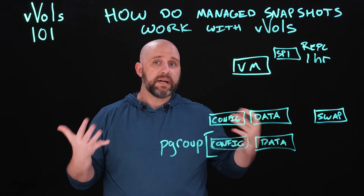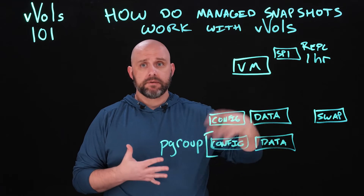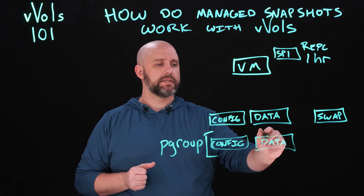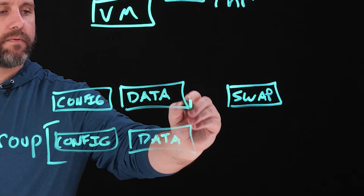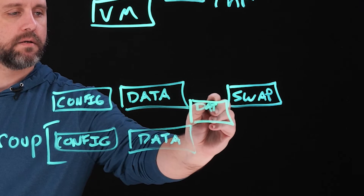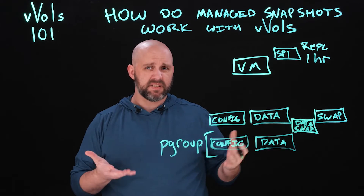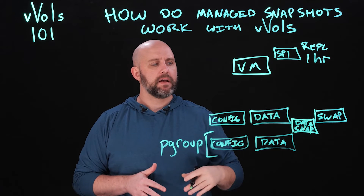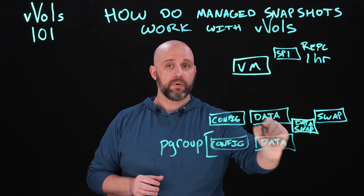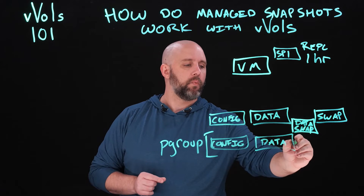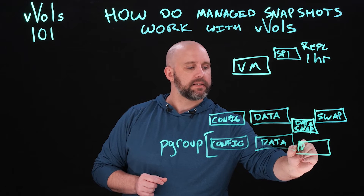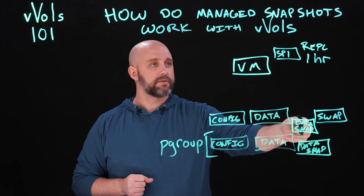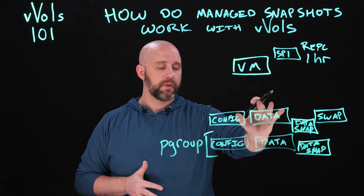When a managed snapshot is taken with vVols, vSphere goes ahead and tells the VASA provider, 'Go ahead and prepare to snapshot this virtual volume.' We get that prepare-to-snapshot virtual volume call as it comes down. When that happens, VASA goes ahead and creates a volume — a data snap, as it's called. This is just an empty placeholder volume sized to whatever the source data vVol is, but it's empty. The VASA provider is making sure it's ready to snapshot this VM as quickly as it can when VMware issues it. That data snap is also placed in the consistency group or protection group that this storage policy was assigned with the parent data vVol.